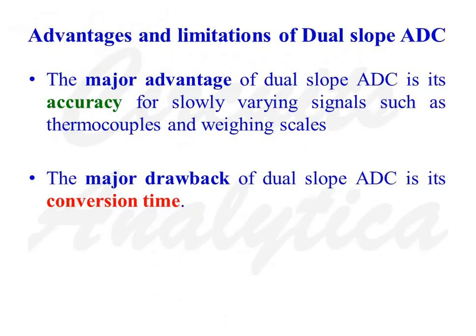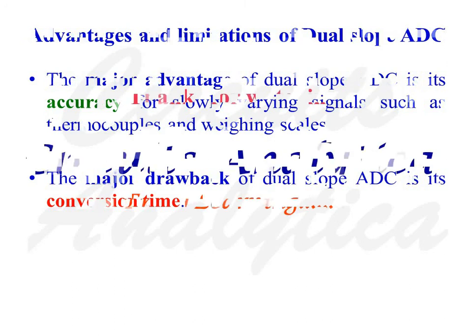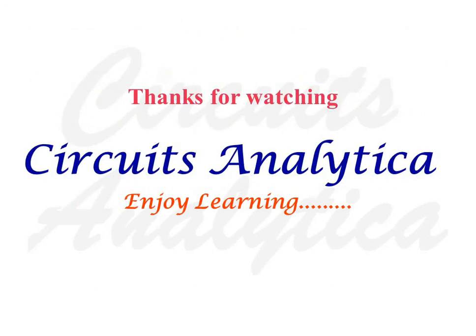The major advantage of dual slope ADC is its accuracy for slowly varying signals such as thermocouples and weighing scales. The major drawback of dual slope ADC is its slow conversion time. Thanks for watching Circuits Analytica. Enjoy learning.